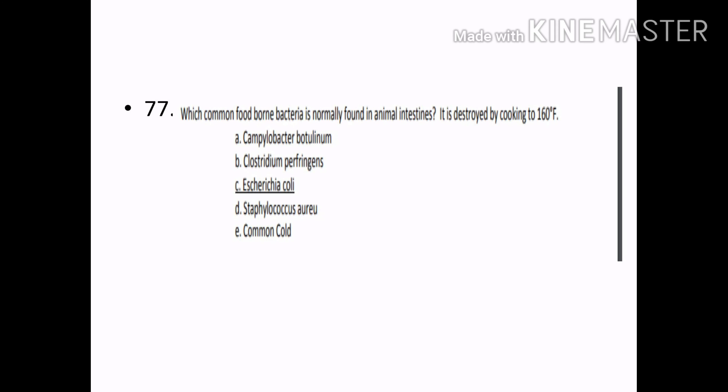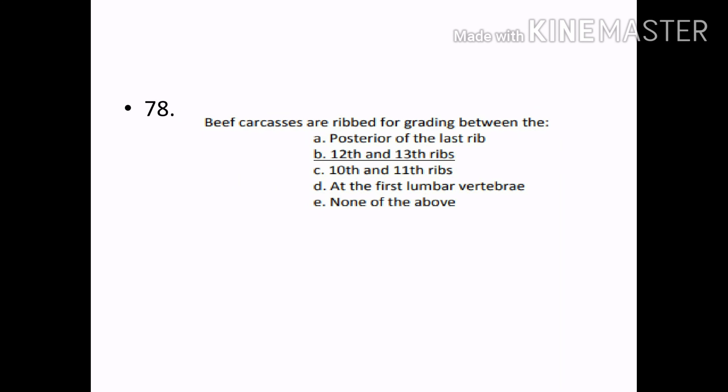Which common foodborne bacteria is normally found in animal intestines and is destroyed by cooking at 160°F? Options — Campylobacter, Clostridium botulinum, E. coli, Staphylococcus. Correct answer: Option C — E. coli.